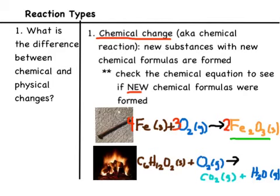The second example is also a chemical change — it's wood burning. Wood is made up mostly of glucose, so we write C₆H₁₂O₂ solid plus oxygen, because burning is a reaction with oxygen, and that reacts to form carbon dioxide gas and water in the gas form. Pause it, balance the equation, and then restart to see if you're right.